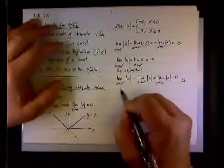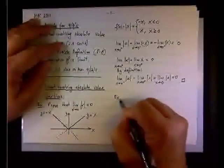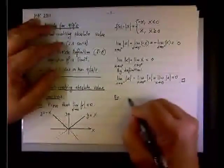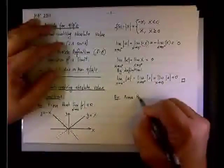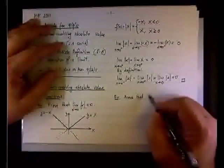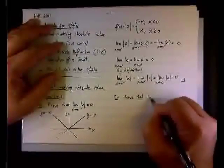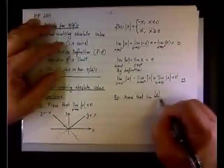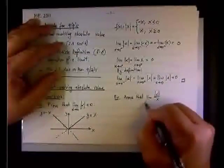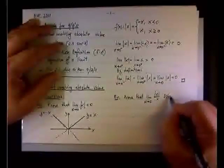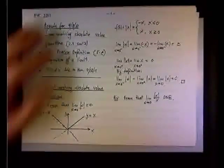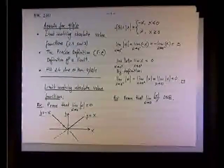We need to prove that the limit of absolute value of x over x as x approaches zero does not exist. Now, the process will be the same thing.